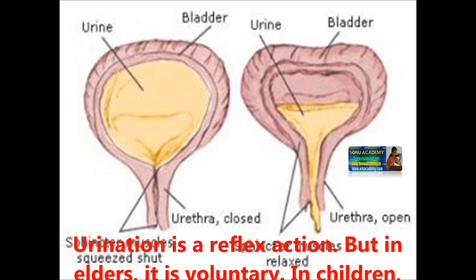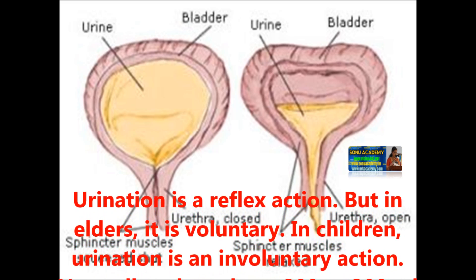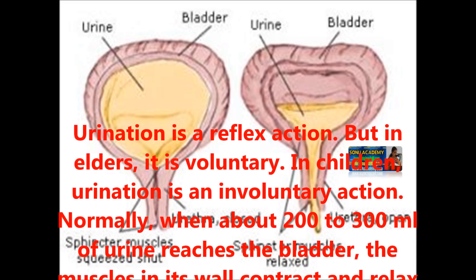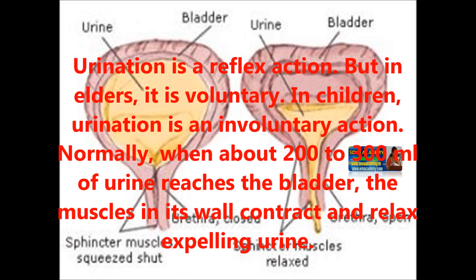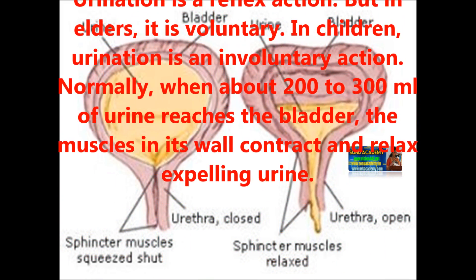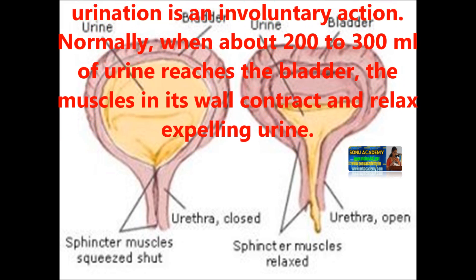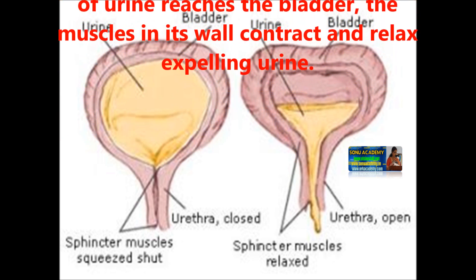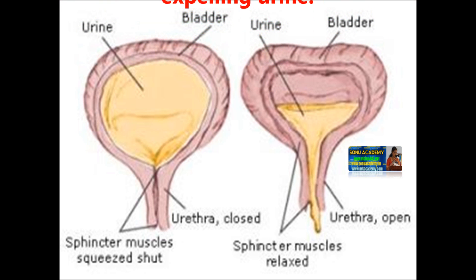Urination is a reflex action, but in adults it is voluntary. In children, urination is an involuntary action. Normally, when about 200 to 300 ml of urine reaches the bladder, the muscles in its walls contract, expelling urine out from our body.